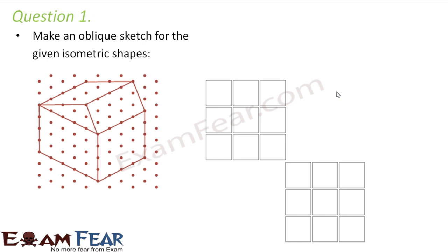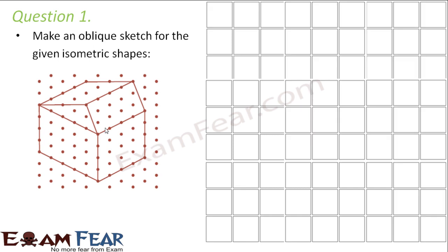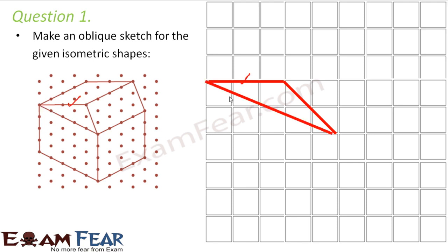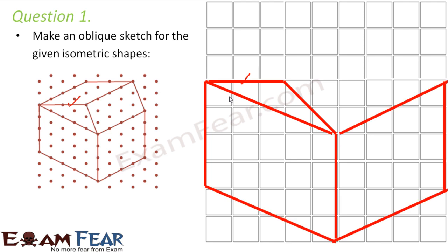Make an oblique sketch for the given isometric shapes. You have been given a hut. To draw an oblique sketch of this hut, we can make use of squared paper. In an oblique sketch it's a rough sketch, so we are not really bothered about dimensions and proportionality — we just need to draw the same thing in a rough way.